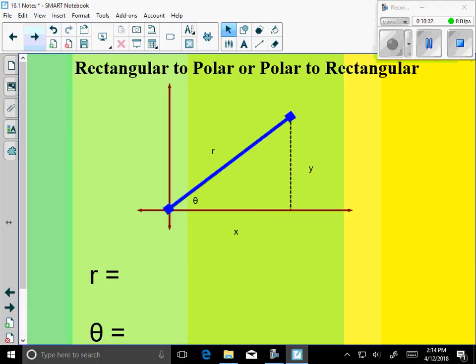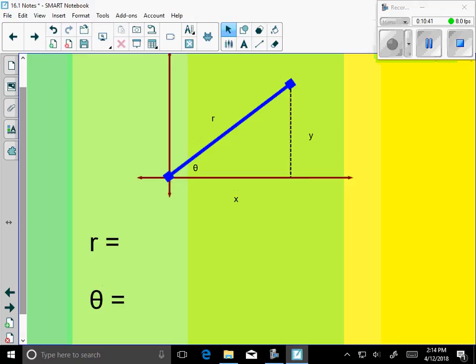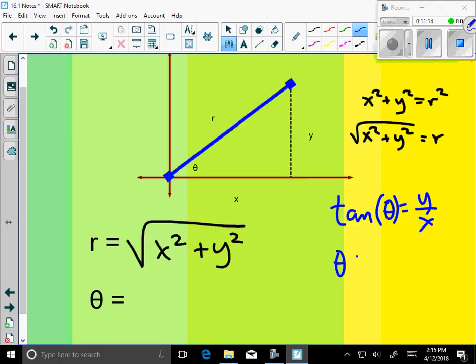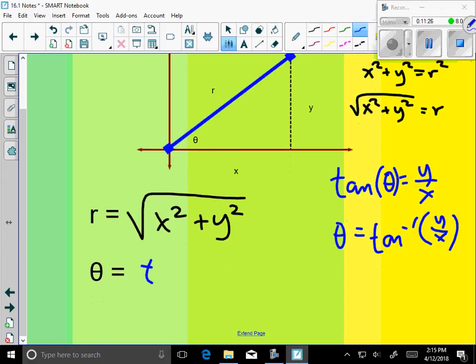I want to talk about general formulas that will help us to go from rectangular coordinates to polar coordinates. We know r is related to x and y in the following way. We know that x squared plus y squared equals r squared. So r equals square root of x squared plus y squared. How could I write theta in terms of x and y? Tangent theta equals y over x, so then theta equals inverse tangent of y over x. So that's going to be our second formula, which will help us to go from rectangular to polar.